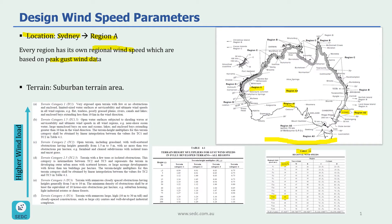The second parameter we want to calculate is terrain category. Our building is located in a suburban terrain area. In the Australian code AS1170.2 there are six different terrain categories: terrain category one, one and a half, two, two and a half, three, and terrain category four.